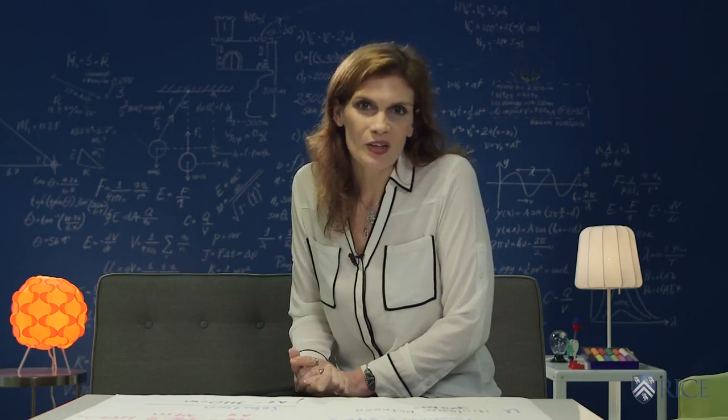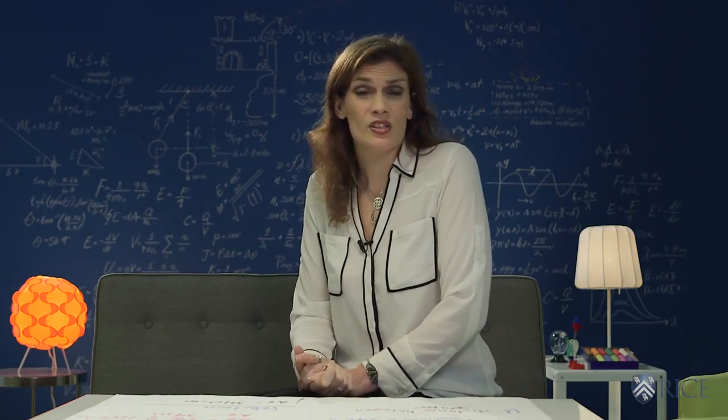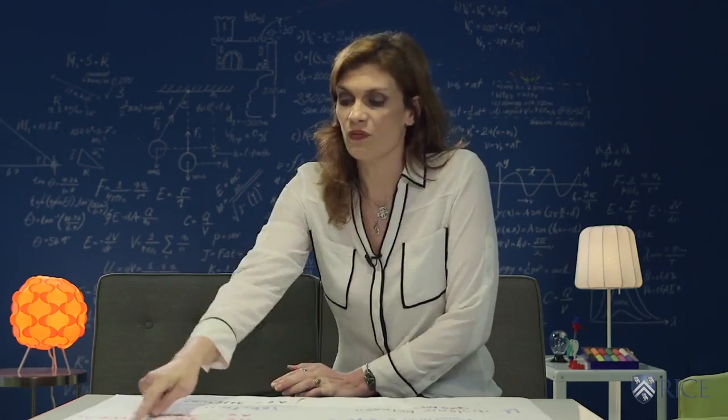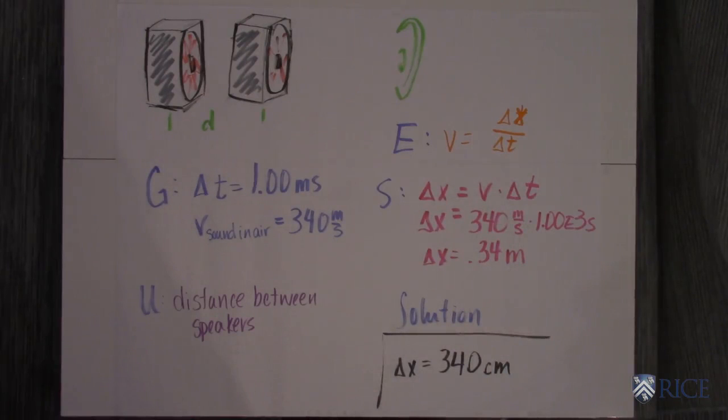So it's not a hard equation, right? You're actually just using a kinematics equation. You're just using v equals delta x over delta t. So you can figure that out and plug that into your equation. You get that your distance is 0.34 meters or 340 centimeters.